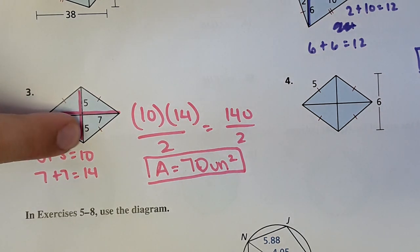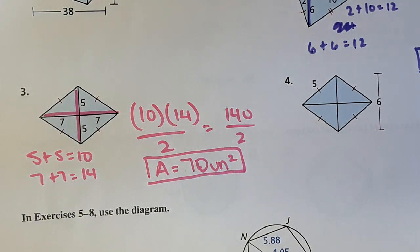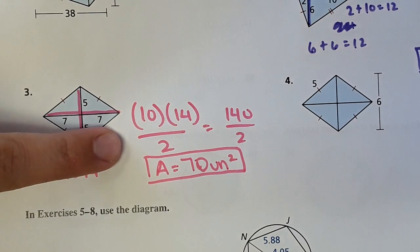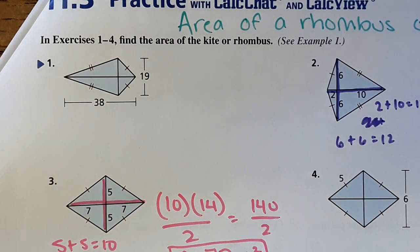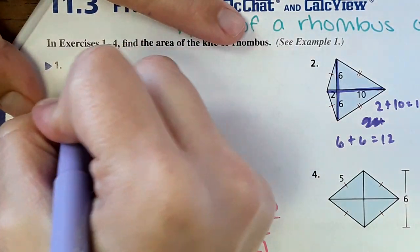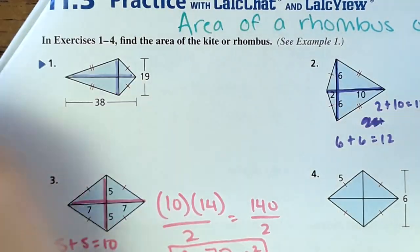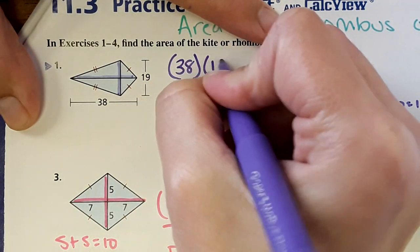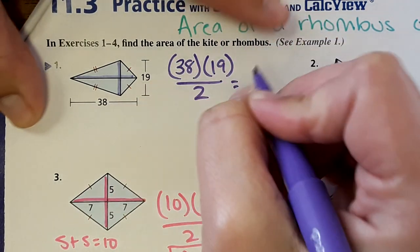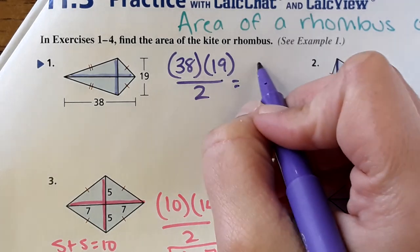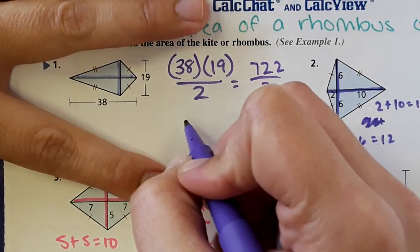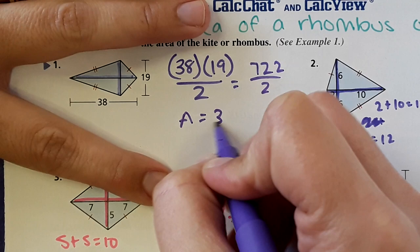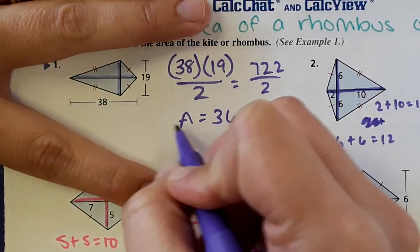You could find the area of each individual triangle if you forgot this equation — you could definitely do that to get the correct answer. This is just a shortcut. So, being that the shortcut works, if you were to find the area of the entire kite, again just diagonal 1 times diagonal 2 divided by 2 and you'll get the answer. So 38 times 19 divided by 2 is 722 over 2, and this comes out to 361 units squared.